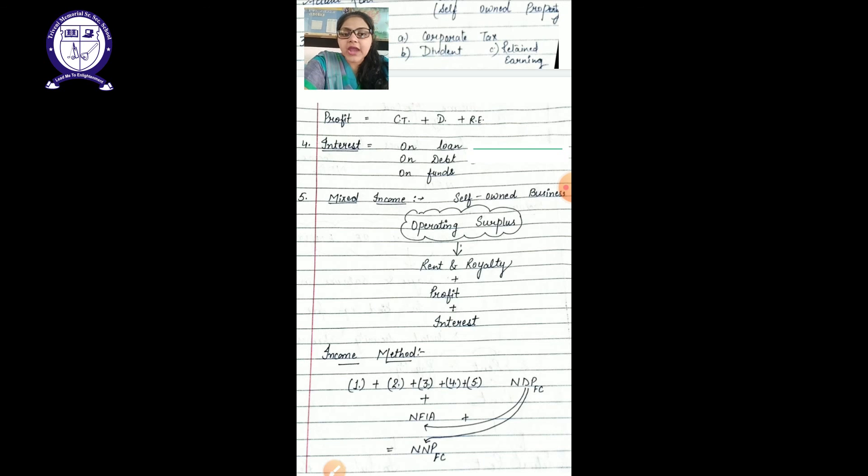We can directly use it as NDP at FC plus NFIA is equal to national income with the help of income method. Here your income method is completed.